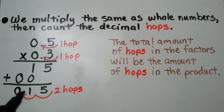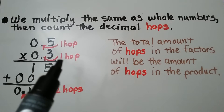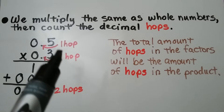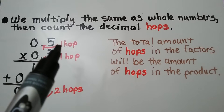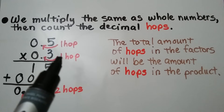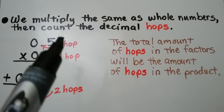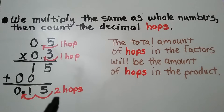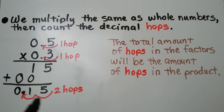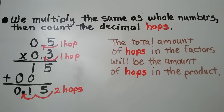We know the decimal place goes here because we count the decimal place value hops starting from the right side. We have 1 hop here and 1 hop here — that's 2 hops in the factors, so there's going to be 2 hops in the product: 1, 2. The decimal point will go here. The total amount of decimal place value hops in the factors will be the total amount of hops in the product.